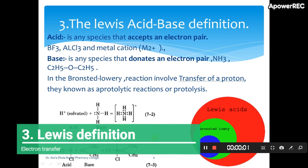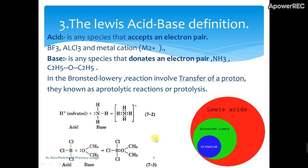Now I will go to the next definition theory — this is Lewis. Lewis said that a base donates an electron pair, and an acid accepts an electron pair. If you notice, Bronsted-Lowry focuses on the transfer of protons, while Lewis focuses on the electron transfer. For example, in the equation, ammonia acts as a base.